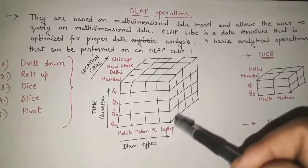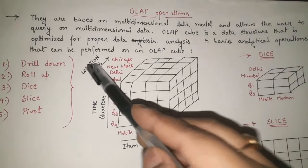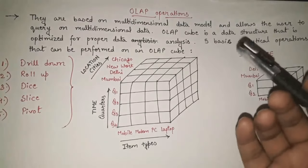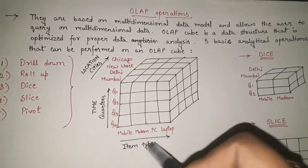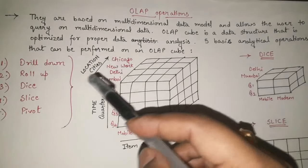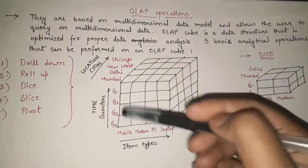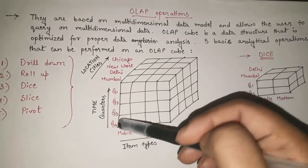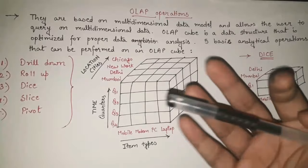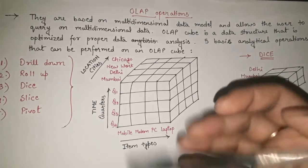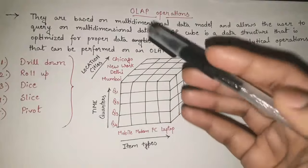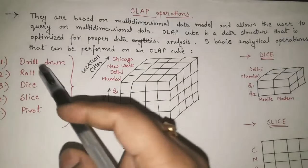For example, the main data given to us has three dimensions: location, time, and item types. In the x-axis we have item types, in the y-axis we have time given in quarters Q1, Q2, Q3, Q4, and in the z-axis we have location in terms of cities. Q1 through Q4 represent four quarters, and each quarter contains three months — so twelve months total. We will apply the operations one by one to extract specific data.